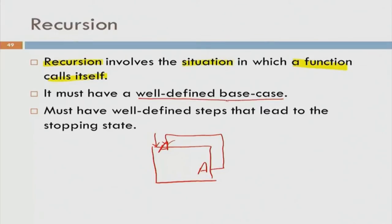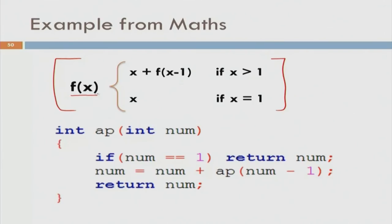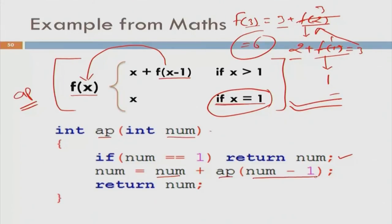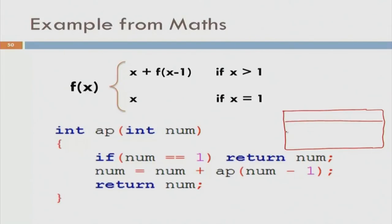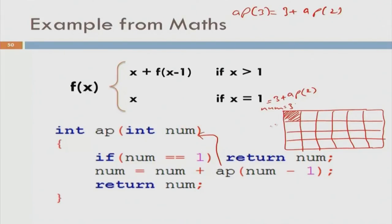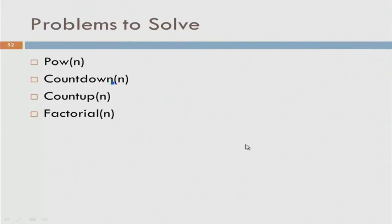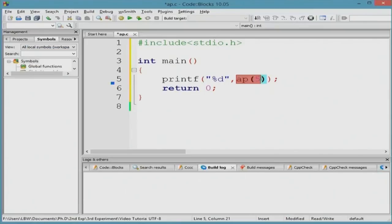What you need to do — the base case is called x and this is f equals to the recursive functions. That is why number minus 1 plus number, number minus all the variables will be stored. Here you can see that he is using a different application — this application is Code Blocks — and he is showing a screencast of that application.